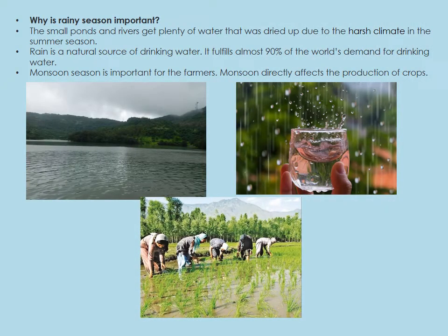Why is the rainy season so important? The small ponds and rivers that were dried up due to the harsh climate in the summer season now get plenty of water in the rainy season. Also, rain is a natural source of drinking water — it fulfills almost 90% of the world's demand for drinking water. Monsoon season is also very important for farmers, as it directly affects the production of crops.